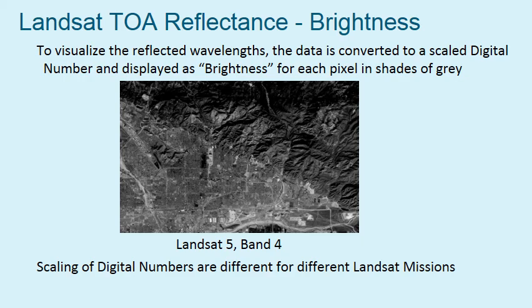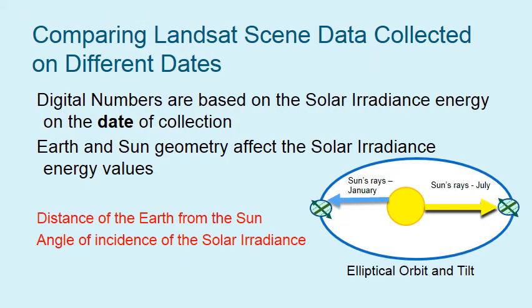Scaling of digital numbers for different Landsat missions are different. Why do we want to compare Landsat data collected on different dates? Digital numbers are based on the solar irradiance energy on the date of collection. The Earth-Sun geometry affects how much solar irradiance energy is available, including the distance of the Earth to the Sun as well as the angle of the Earth's tilt.